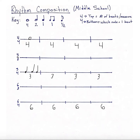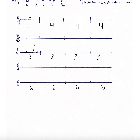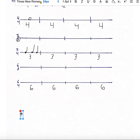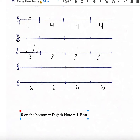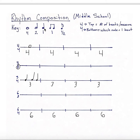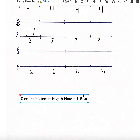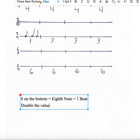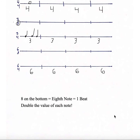Now we're going to go over some new territory — when we have that 8 in the bottom. So when we have 8 in the bottom of our time signature, that's going to tell us that an eighth note now equals 1 beat. So when we have 8 on the bottom, the eighth note now equals 1 beat. That just means that we're going to change the key. So now instead of our quarter note equaling 1 beat, the eighth note is going to equal 1 beat.